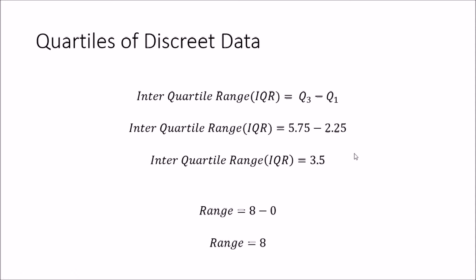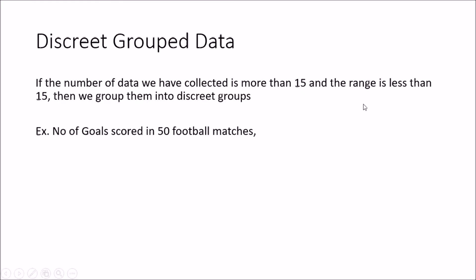The interquartile range of 3.5 means that the middle 50% of the data spans a range of 3.5. The total range is 8 − 0 = 8, meaning 100% of the data has a range of 8. So the range is the spread of 100% of the data and the interquartile range is the spread of the middle 50% of the data.